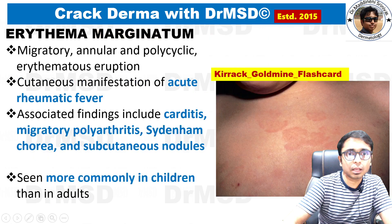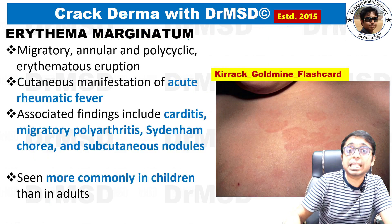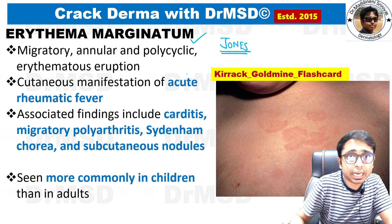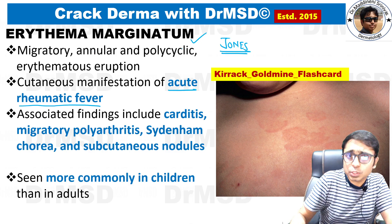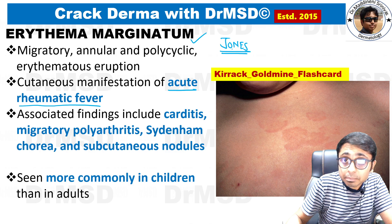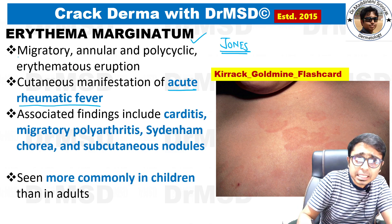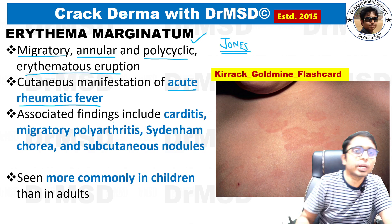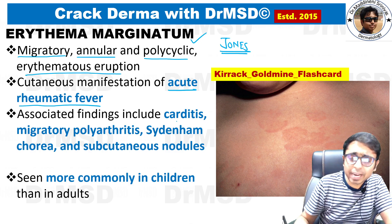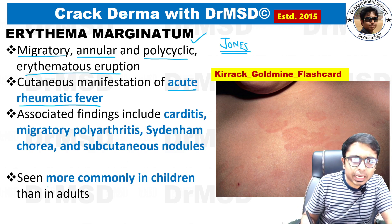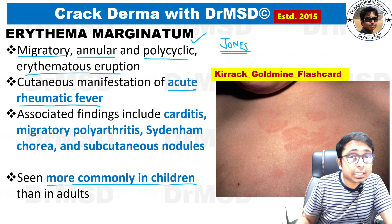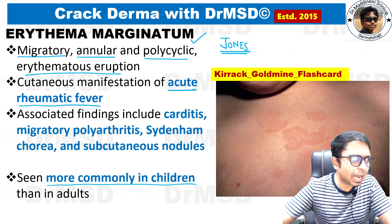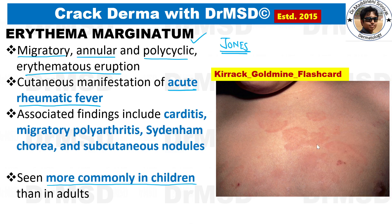The third erythema is erythema marginatum, which you may have heard of in the context of Jones criteria in acute rheumatic fever. Erythema marginatum is one of the major criteria in Jones criteria. It presents with migratory annular polycyclic erythematous eruptions. It is most commonly seen in children, and in the image you can see erythematous annular polycyclic eruptions present on the skin.